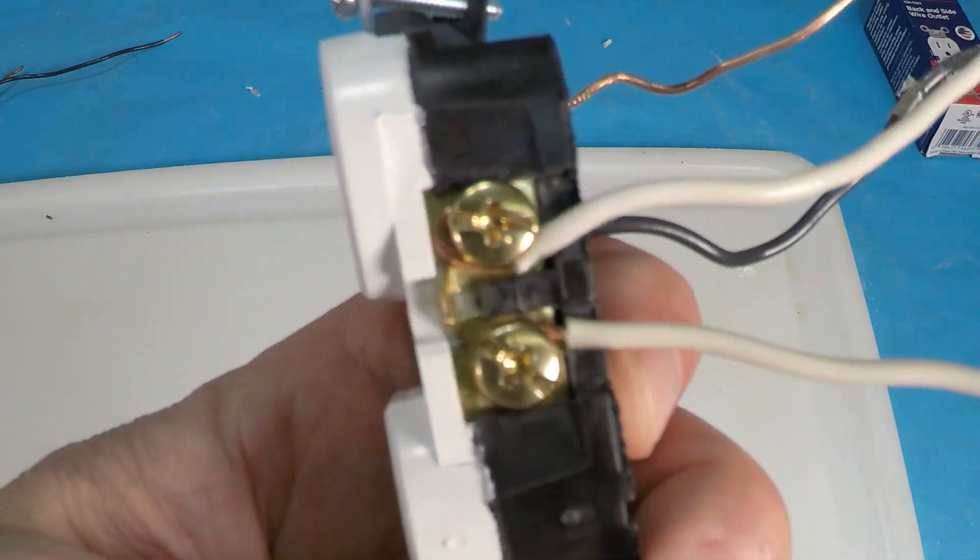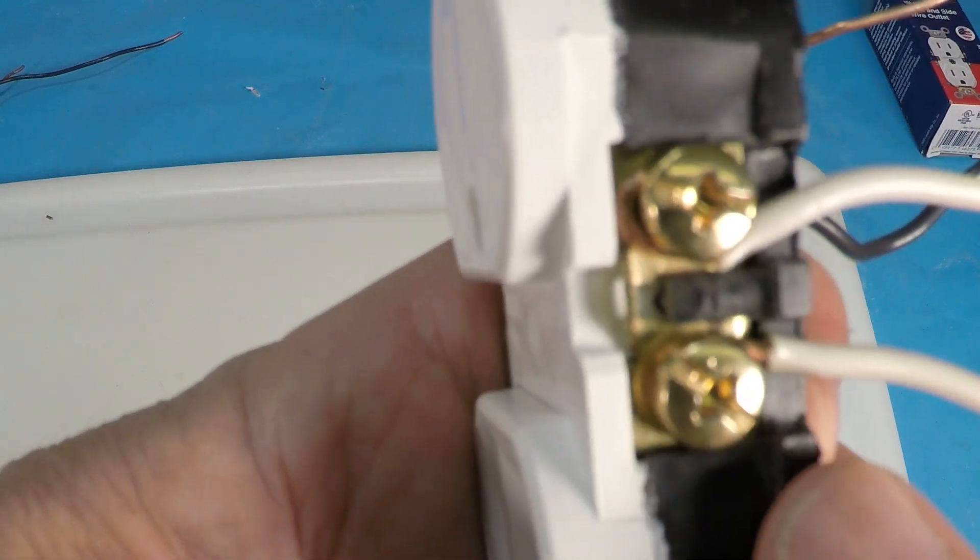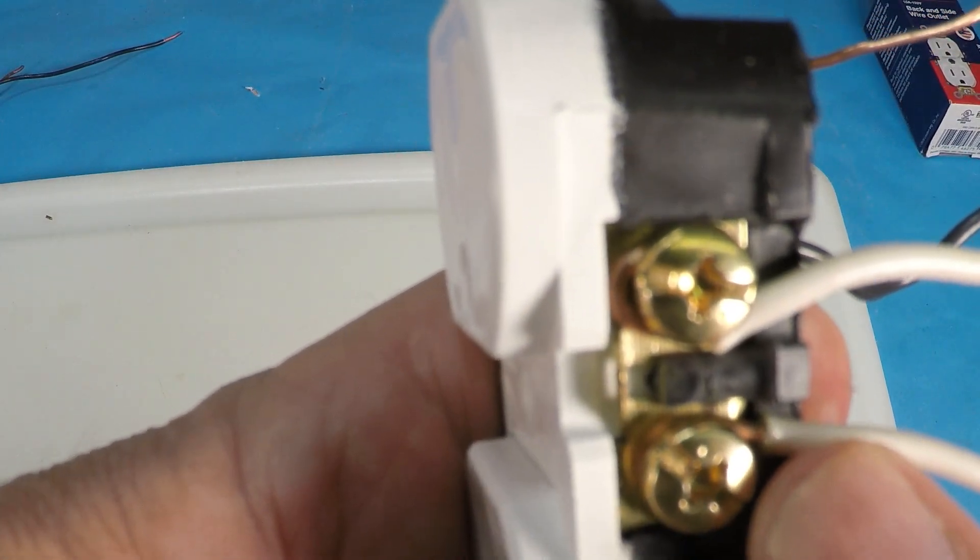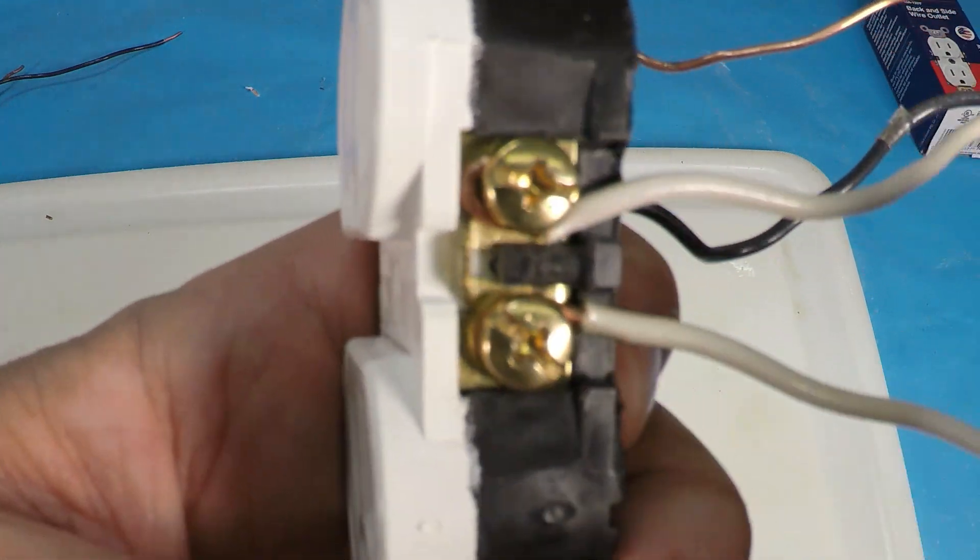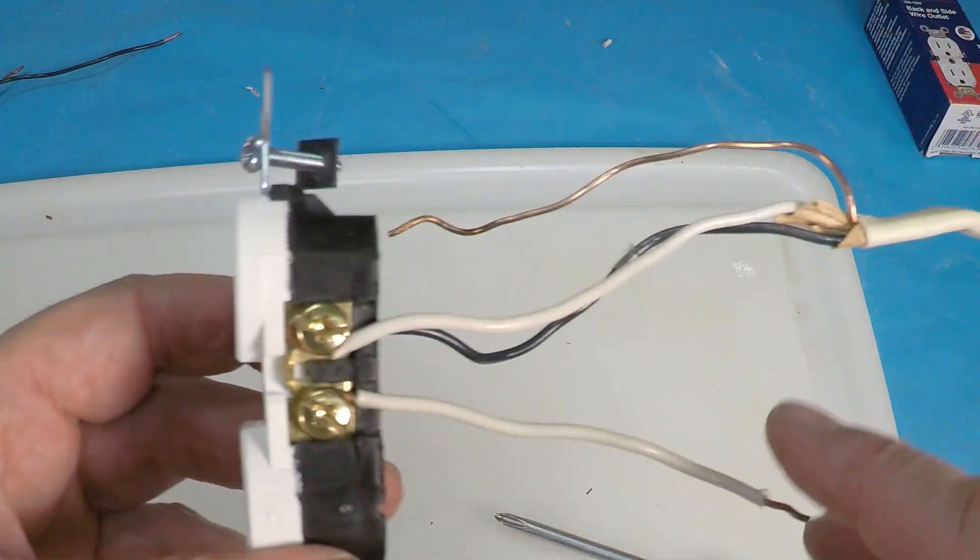However, if you have it going clockwise, it's going to pull that wire back in as it should. So even though this one is stripped properly and you have the right amount of insulation and copper, it's just going in the wrong direction.